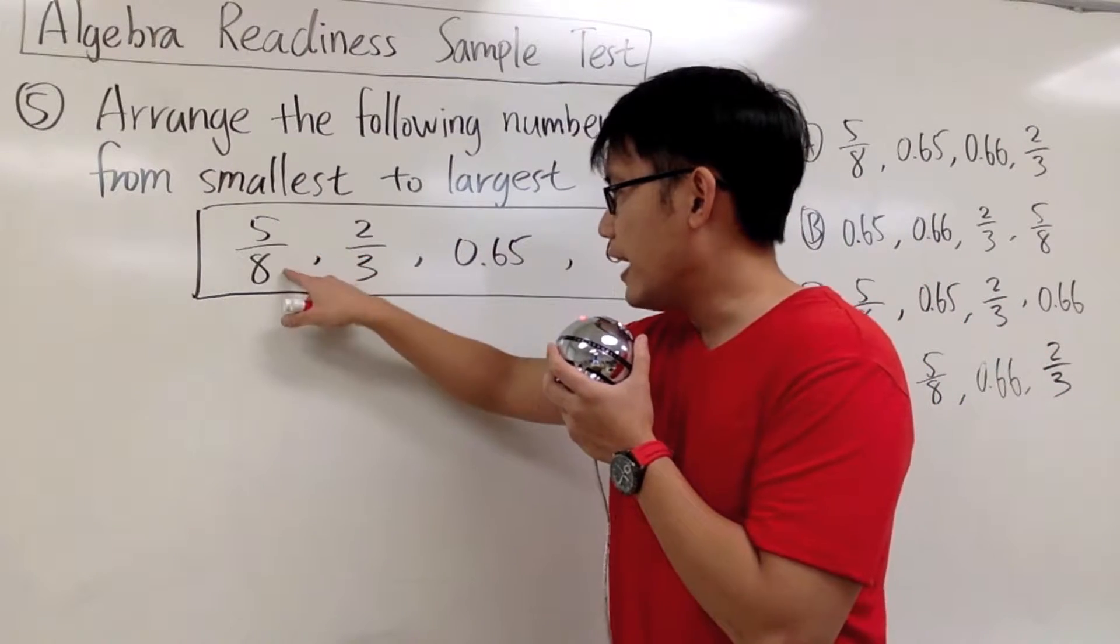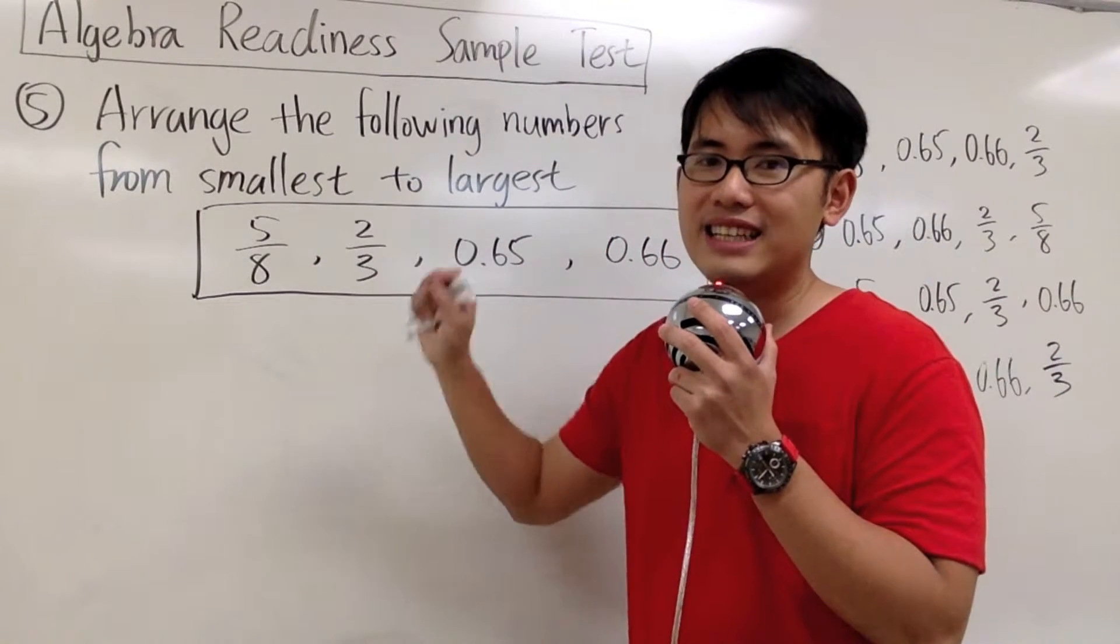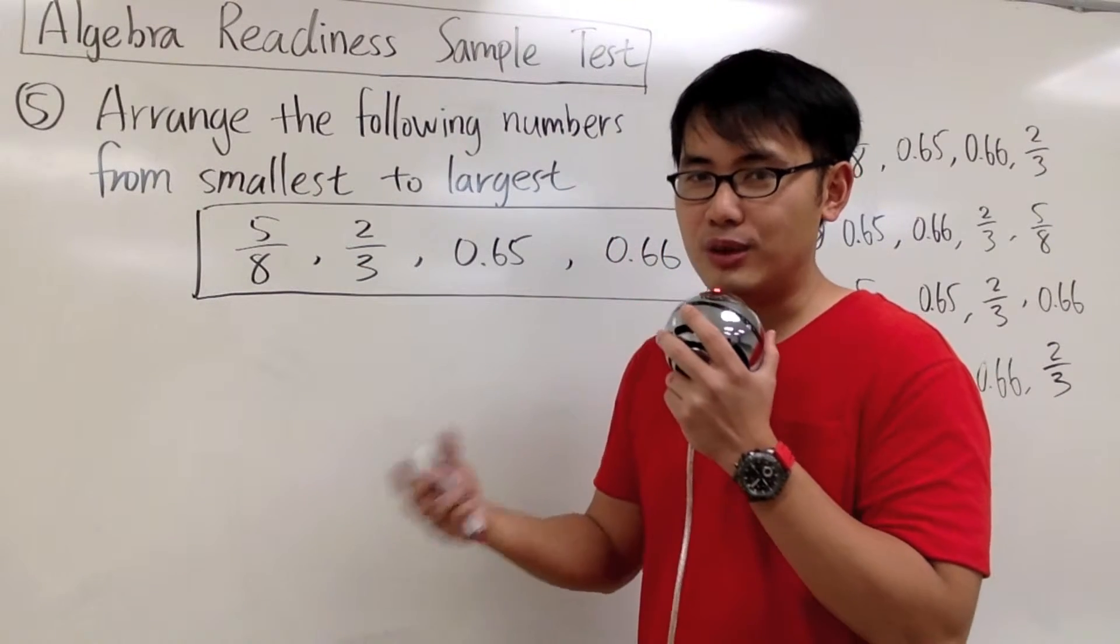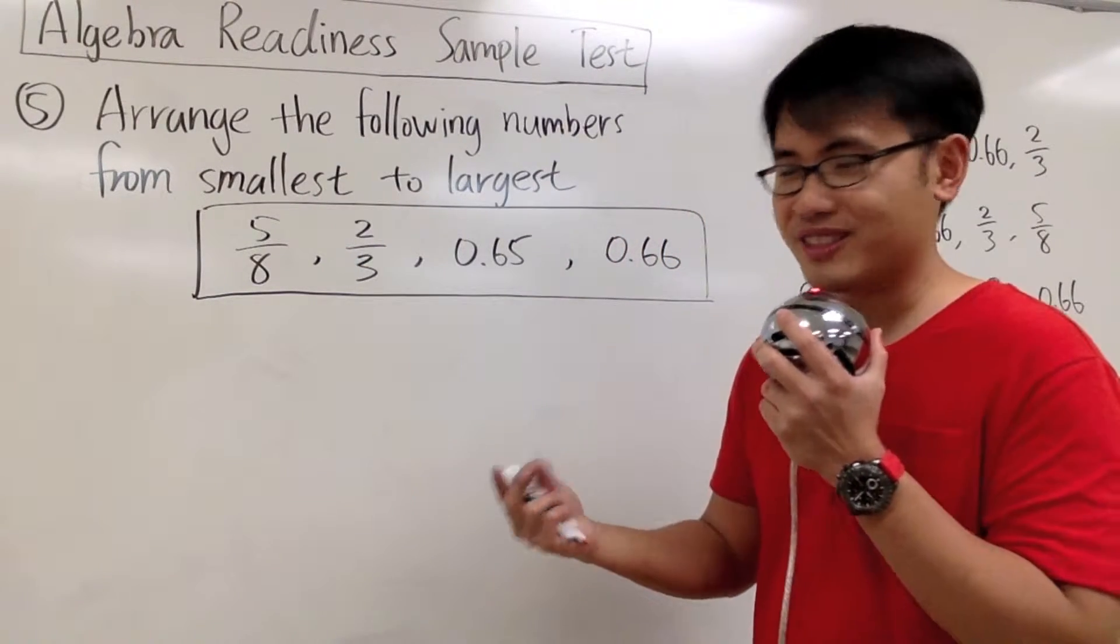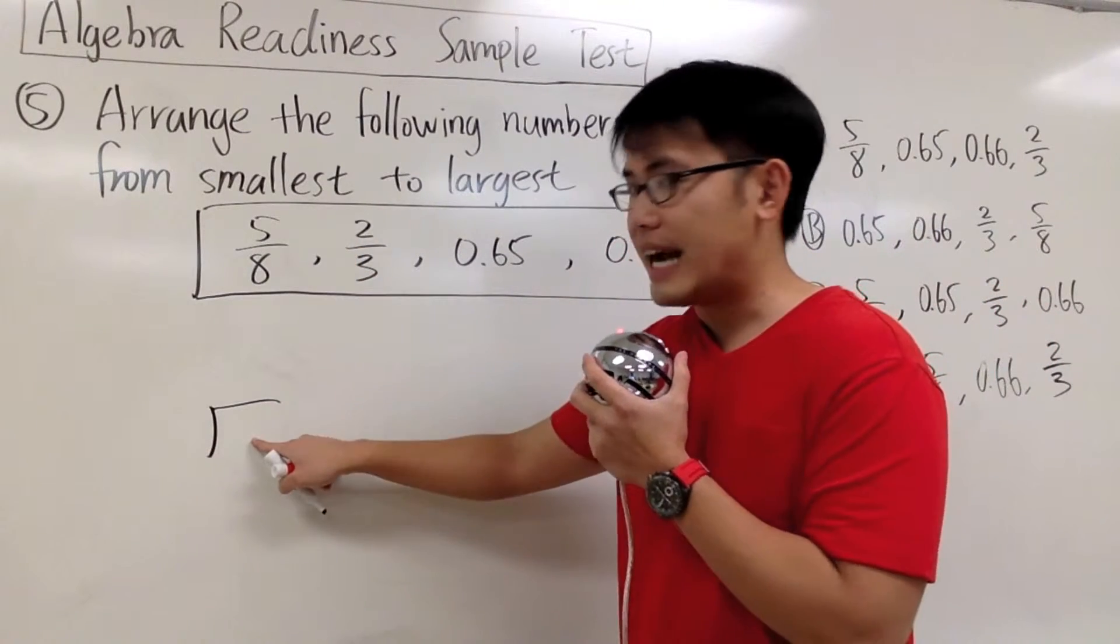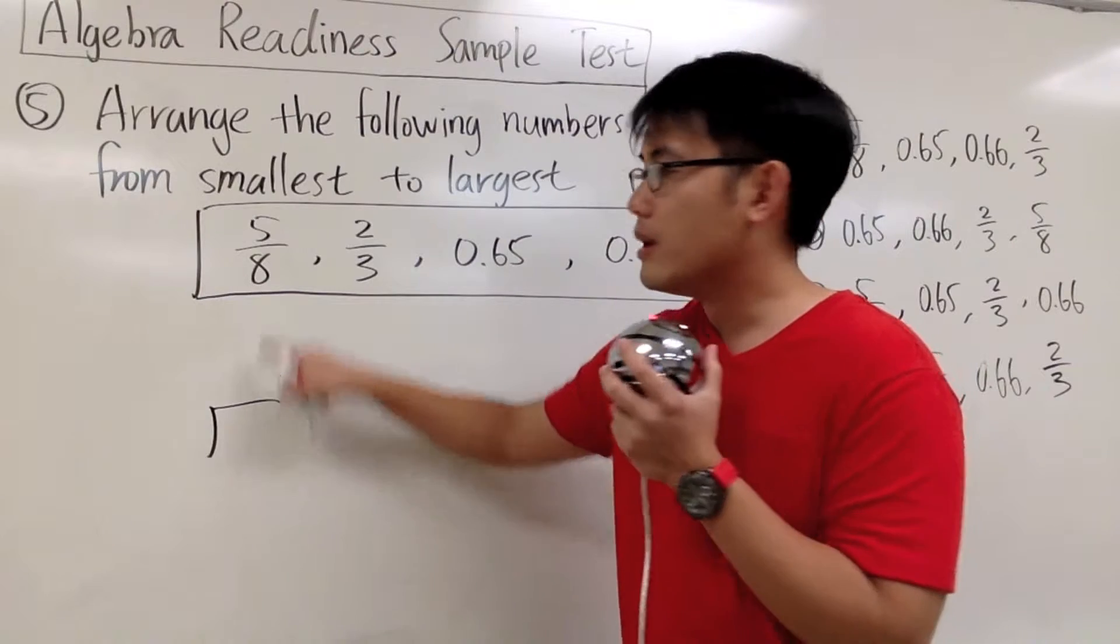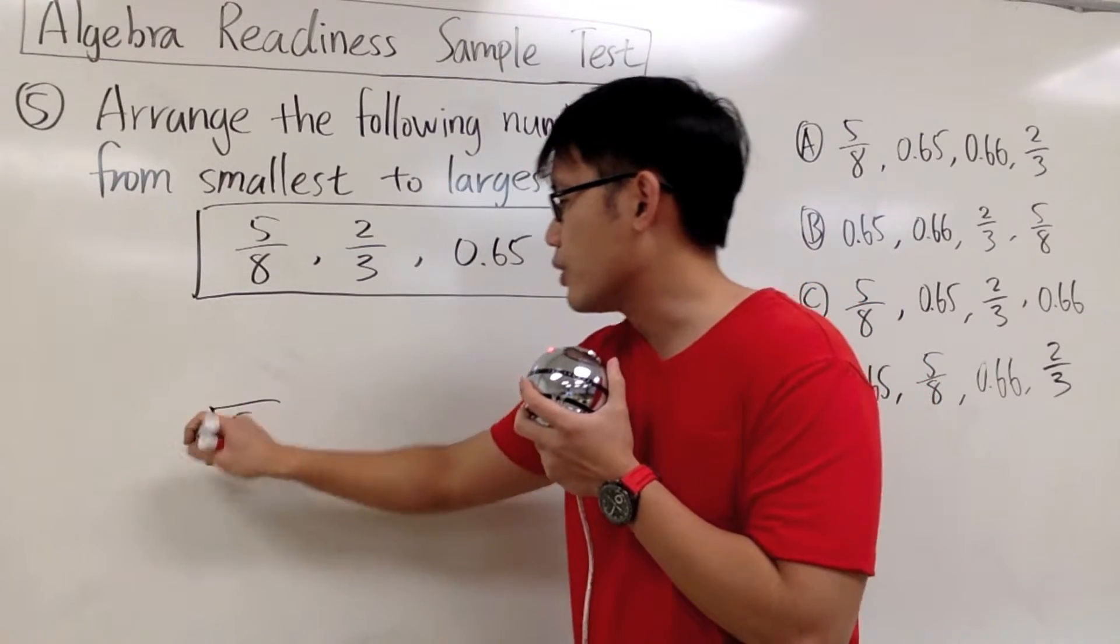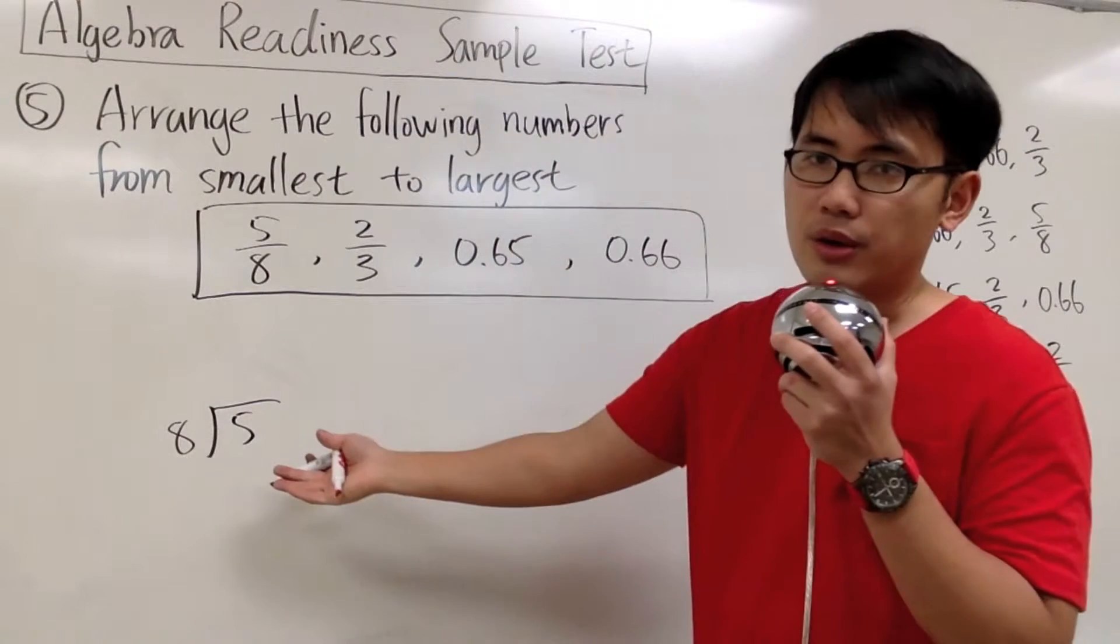Alright, 5 over 8 is the same as 5 divided by 8. Therefore, to change this into a decimal, we are going to divide. And to divide, we are going to use long division. So, the 5 goes inside because that's the number on the top. Put down the number on the top inside. And then the 8 will go on the other side. Let's go ahead and divide.